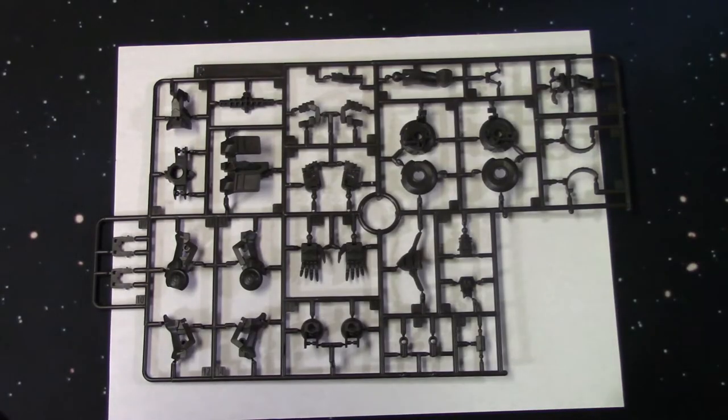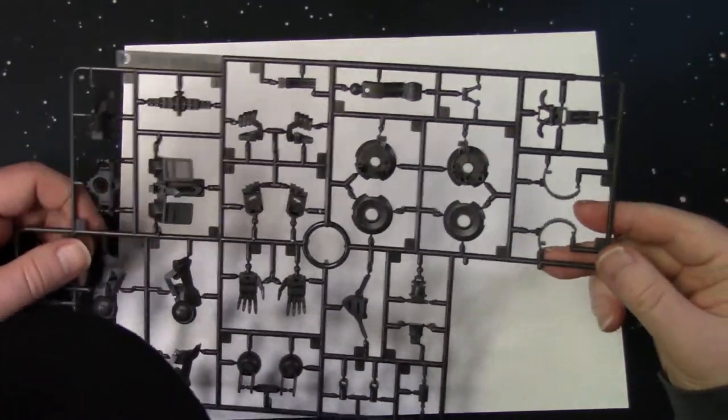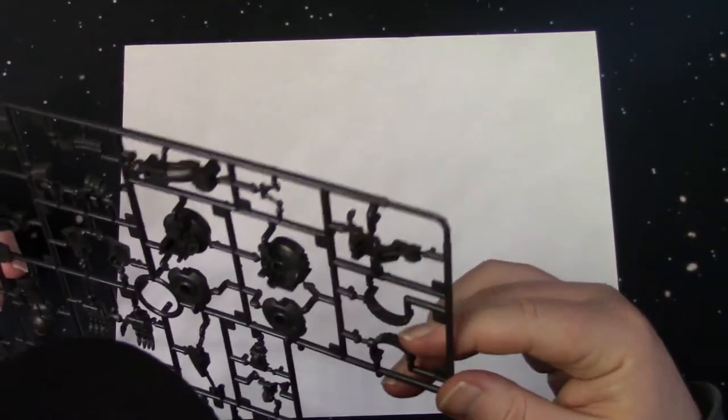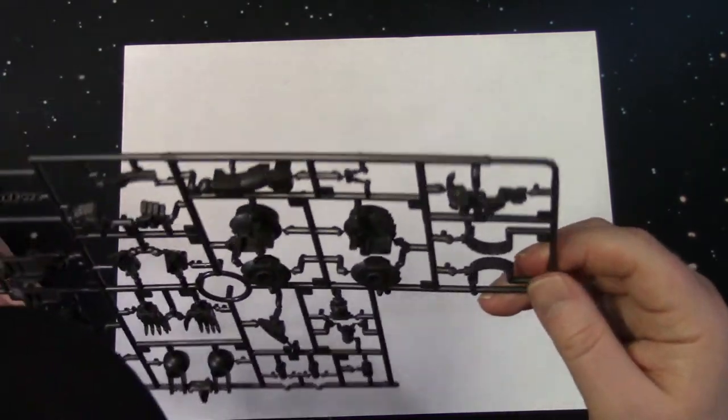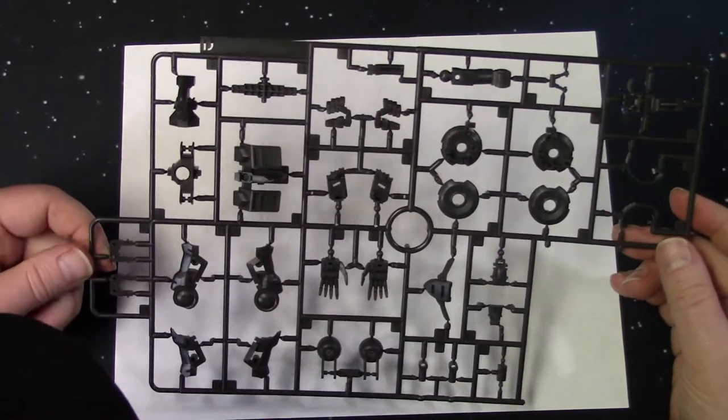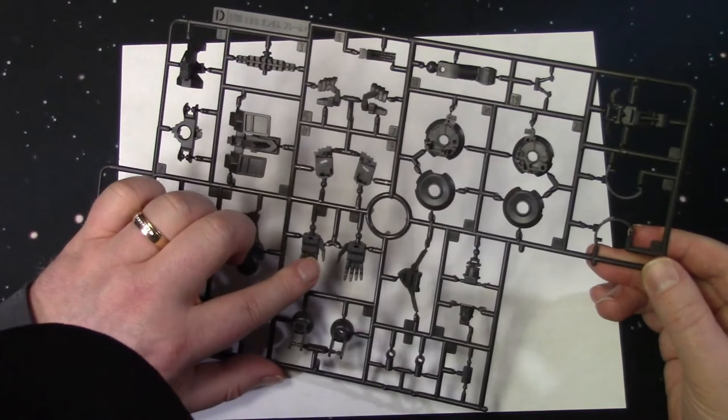So here's the D sprue. And the frame parts. And I got to say, I mean, I think it's kind of cool that these kits have inner frames. So I think it's pretty cool. I mean, again, it's not master grade level, supposedly, but it's close.